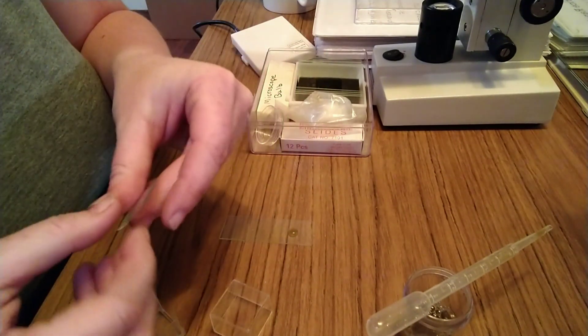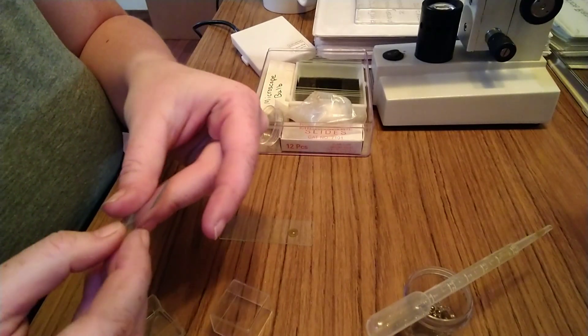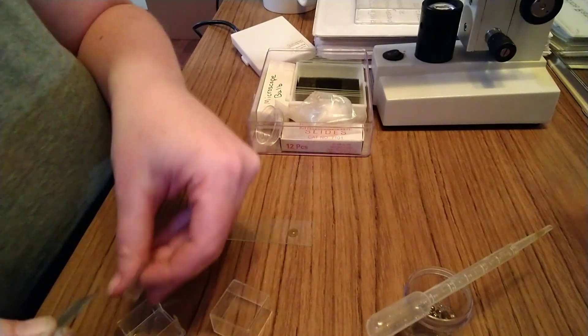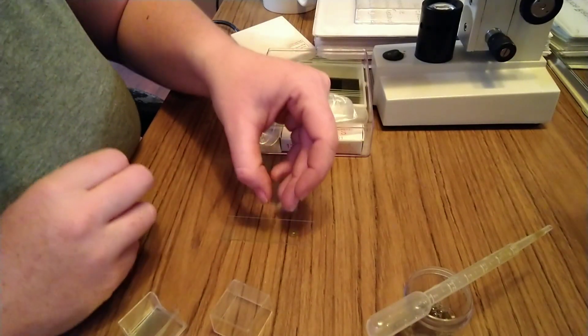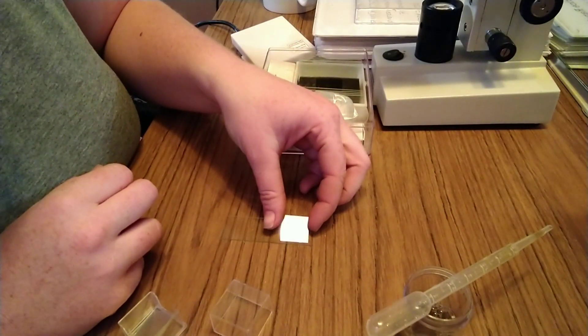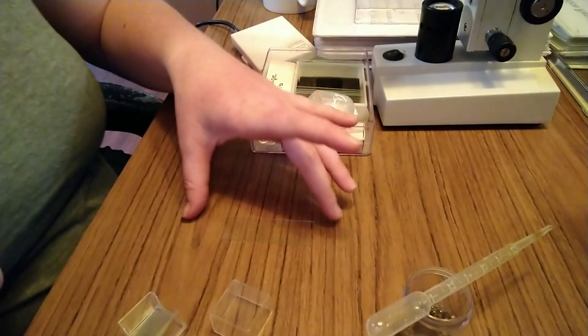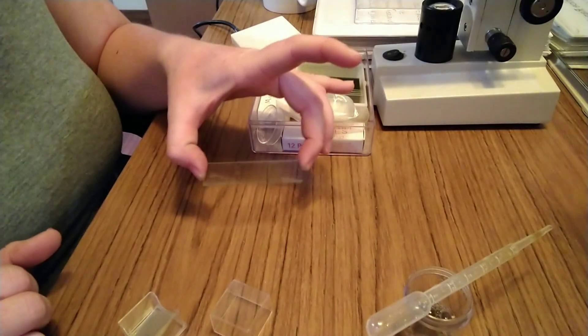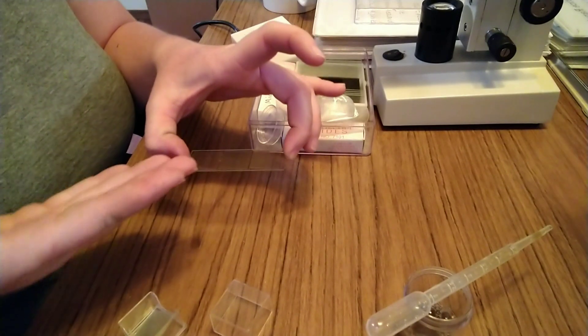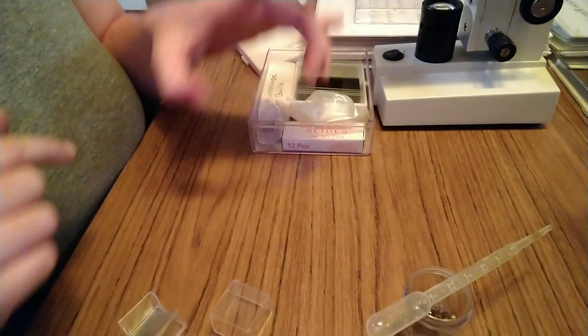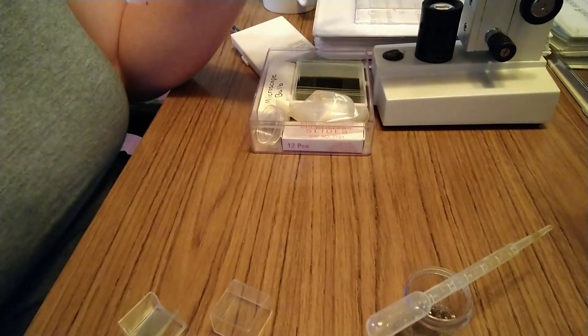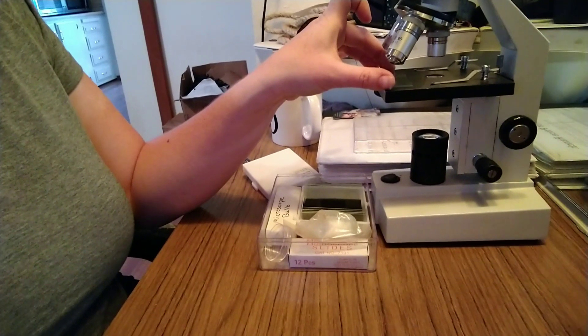Okay, so now immediately we're gonna take our cover slips - very, very tiny and thin - and we're gonna cover each one. You want to do it kind of carefully that way you don't cause any air bubbles. All right, so now we're gonna let this sit for about five minutes, not any longer though. The time that we let it sit, the eggs will float to the top so we can see it better.